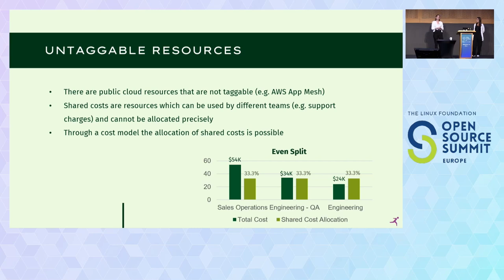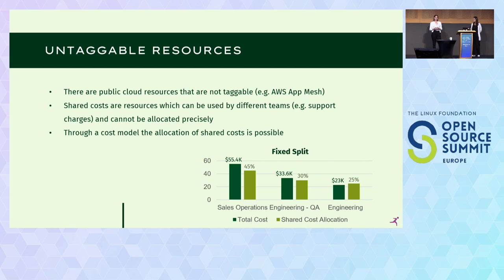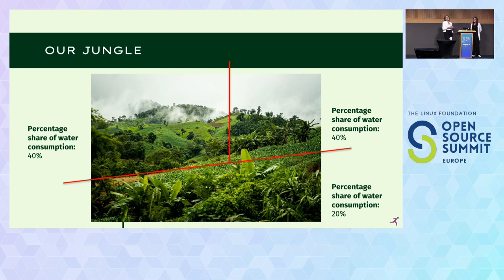There are three different split cost models to help allocate these shared costs. First, the even split: shared costs are distributed evenly among the different business units. Second, the proportional split: it depends on the raw spend of the business unit — so if business unit A has the most raw spend, they pay the most of the shared costs. Third, the fixed split: this is a fixed percentage determined by the evaluated past spend.